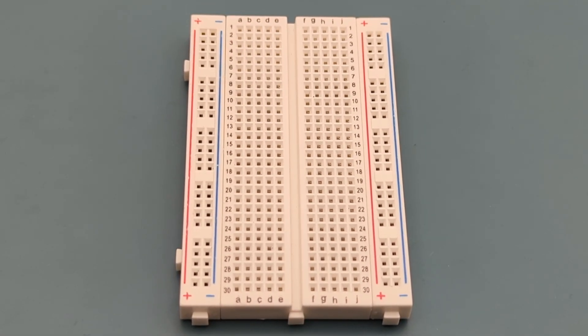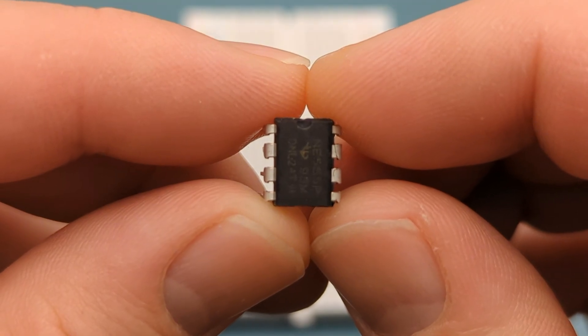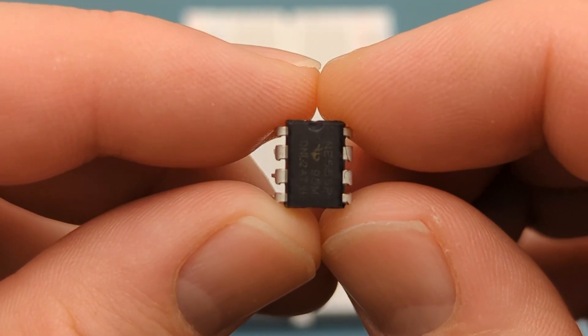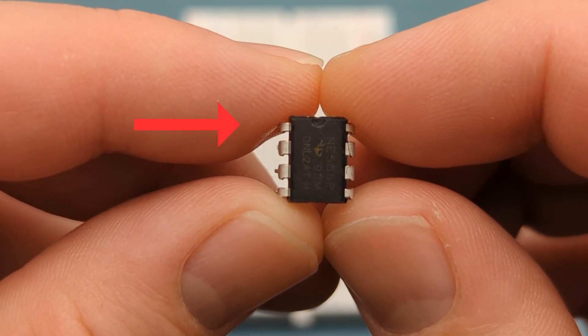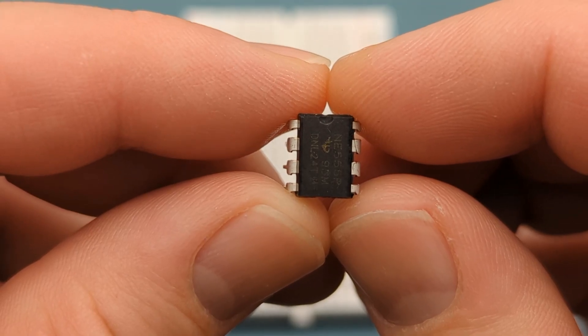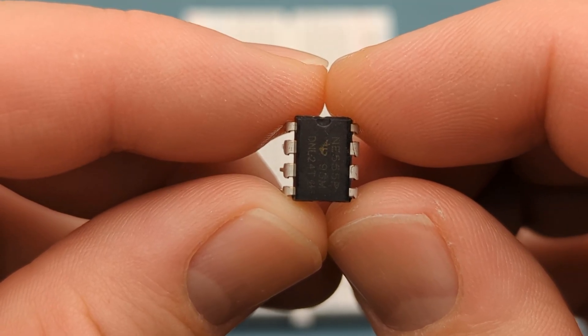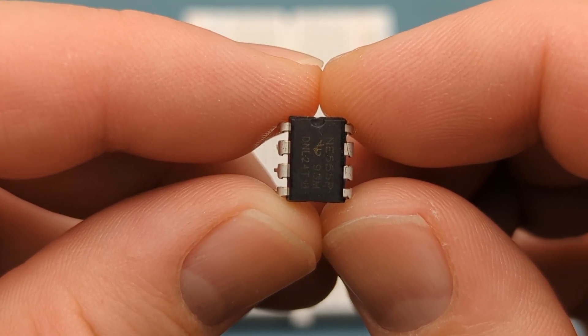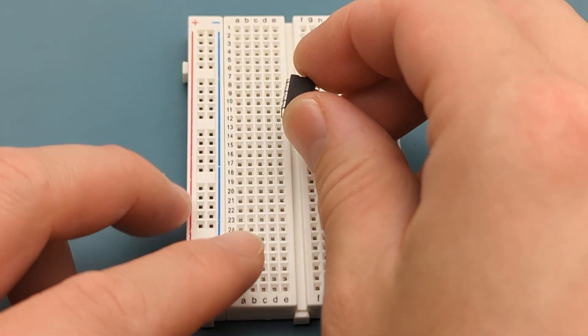Let's set up the circuit step by step. Start by placing the 555 timer IC onto the breadboard. Remember, the pins are numbered counterclockwise, starting from the top left. Refer to the circuit diagram if you have questions about the circuit connections. Insert the 555 timer in the middle of the breadboard.